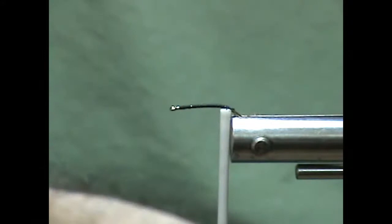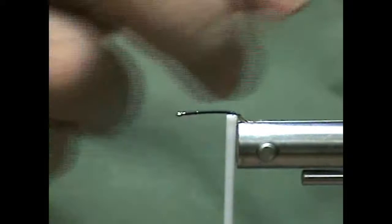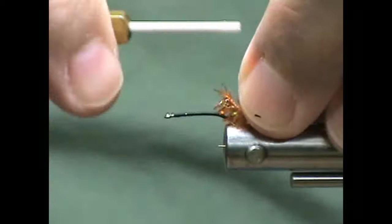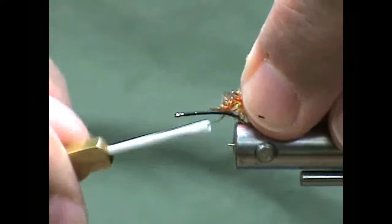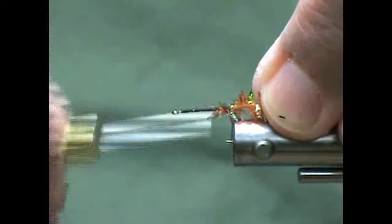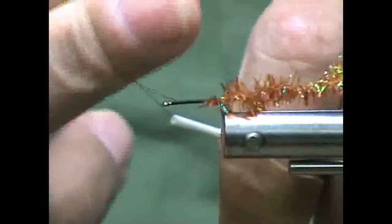The next thing I'm going to do is I'm going to take some cactus chenille medium in a root beer color. This is some really nice material. It really gets the light and it shows up all over. Bring my thread back up to about an eye's length behind the eye of the hook.